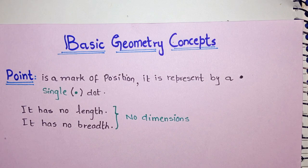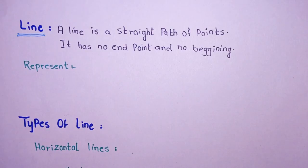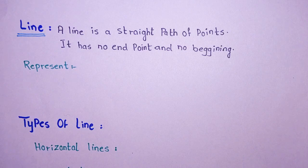A point is a small mark that holds great importance in geometry. We can also call a point a dot. Now let's move on to the next concept.